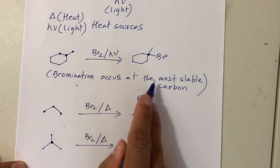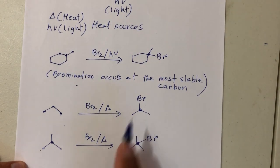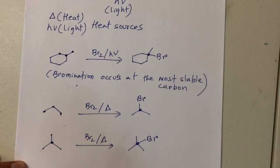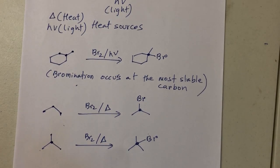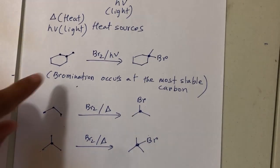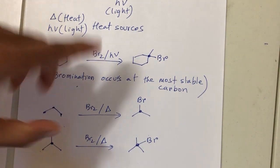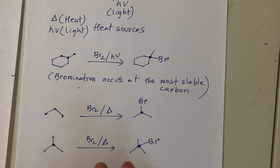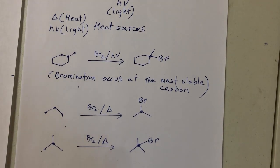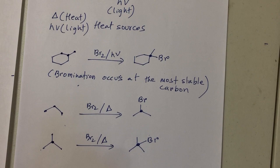Bromination occurs at the most stable carbon, which is tertiary in that case. These reactions are simple — just remember whenever you see Br2 with light, or NBS, what happens. There are only two reaction types for this chapter. There are more radical reactions, but looking at the time constraints, we don't go into the details, so only two reactions for now.